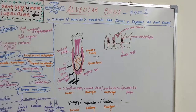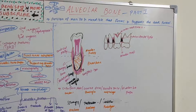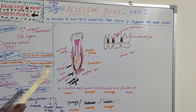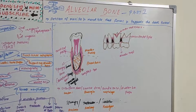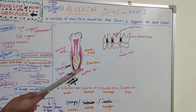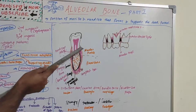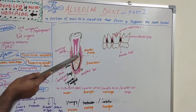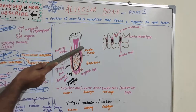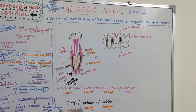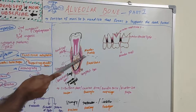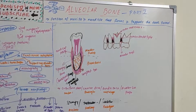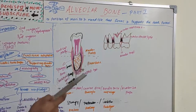Alveolar bone proper is a thin layer of compact bone. The alveolar process extends up to the root tip — that is an arbitrary point — and the remaining bone is the basal bone. When we take a longitudinal section, we see two layers: the outer compact bone and the inner cancellous or spongy bone.